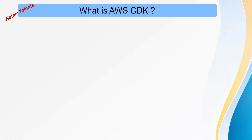Today we're going to talk about AWS CDK, which is a DevOps-style tool that lets you provision your infrastructure through code. AWS CDK stands for AWS Cloud Development Kit.